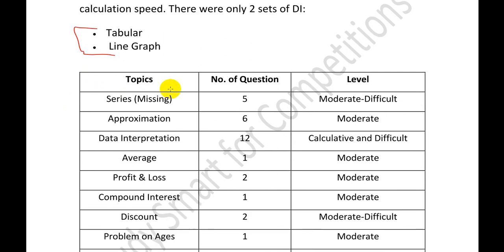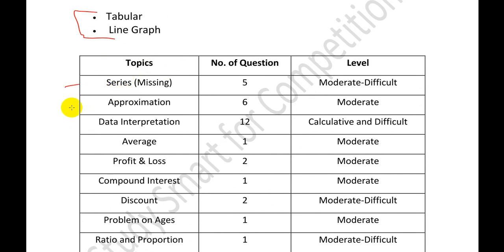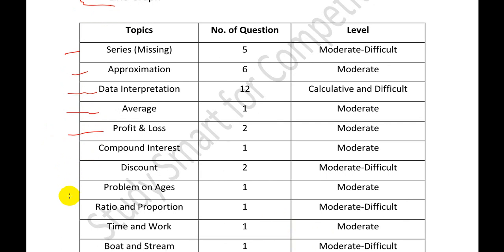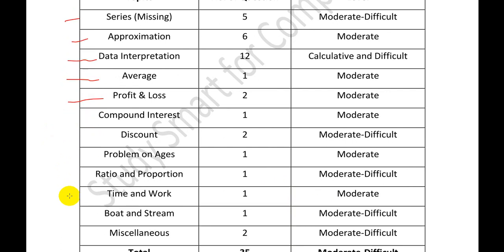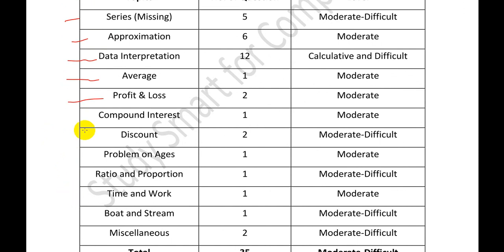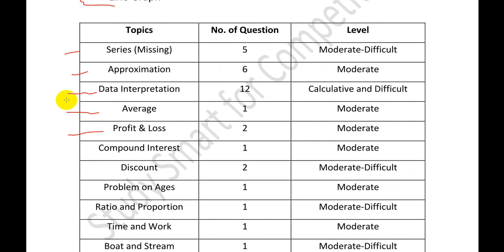Topic-wise breakdown for quantitative aptitude: series had 5 questions, approximations 6, DI 12, average 1, profit 2, compound interest 1, discount 2, problem on ages 1, ratio and proportion 1, time and work 1, boat and stream 1, and miscellaneous 2 — totalling 35 questions. DI was considered more calculative and difficult, and series was a bit harder compared to the morning shift. Memory-based questions will be uploaded as soon as possible.